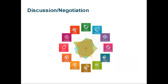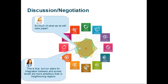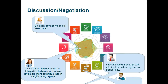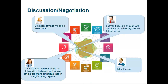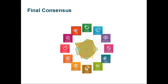They must also decide on the rating for breadth of ambition. Here, somebody proposed a lower rating — it was the nurse who states: 'So much of what we do still uses paper.' The doctor disagrees, explaining: 'This is true, but our plans for integration between and across levels are more ambitious than in neighboring regions.' The other two users aren't sure and have provided an intermediate rating. Because the doctor has had communication with neighboring regions, the team may decide that her rating is correct and thus decide on the higher rating. The team will go on to make a decision for all of the dimensions and end up with a graphical representation on the spider diagram.